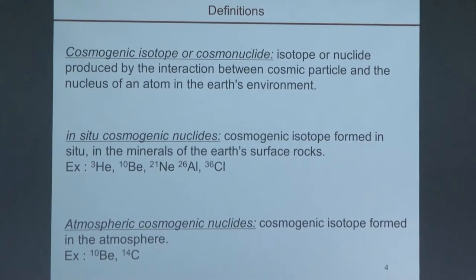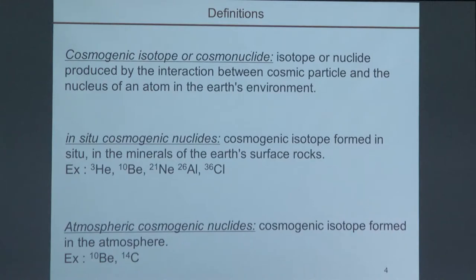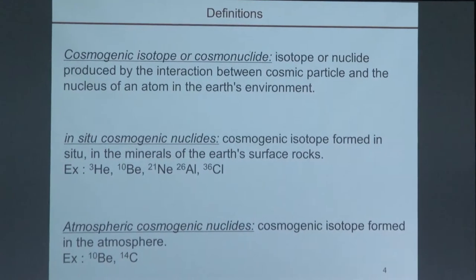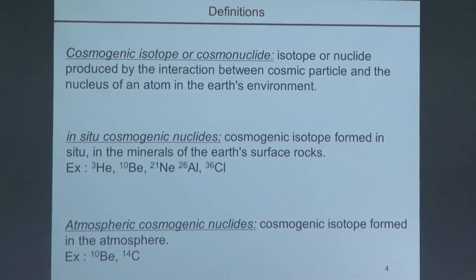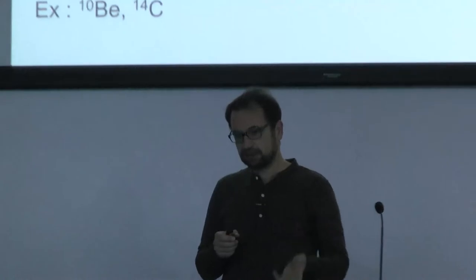First, a definition: what is a cosmogenic nuclide? It is an isotope produced by the interaction between a cosmic particle and the nucleus of an atom in Earth's environment — an atom in the air, or an atom at the Earth's surface in the minerals of rocks. The term in situ is reserved for cosmogenic isotopes formed within the mineral at the Earth's surface.